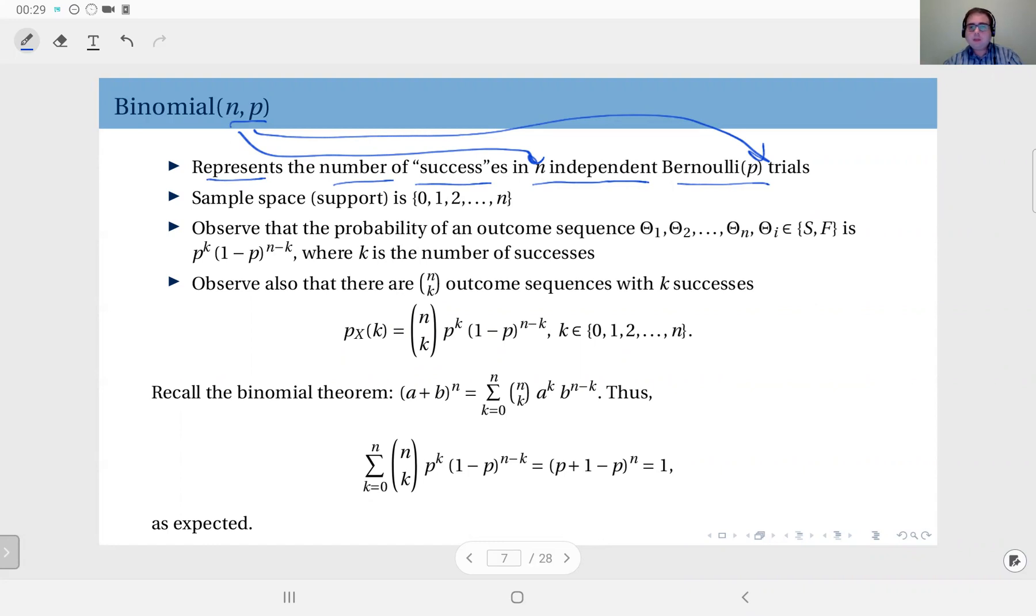For instance, you have a coin where, let's say if you define success to be heads, the probability of heads is assumed to be p and you toss this coin n times. So the binomial distribution represents the number of successes in this sequence.